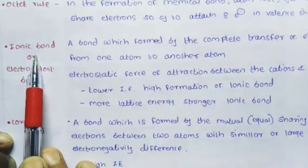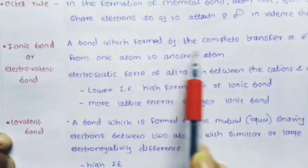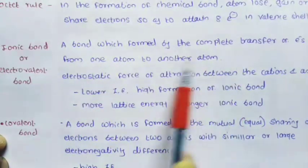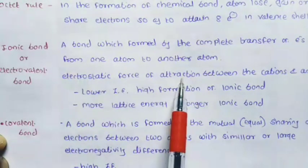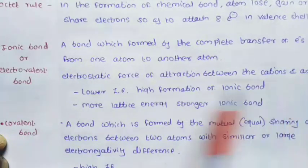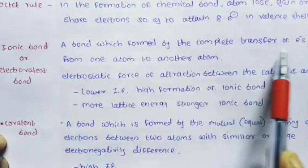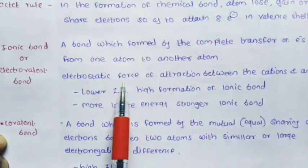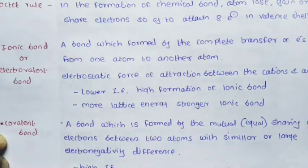The third term is ionic bond, also called electrovalent bond. A bond which forms by complete transfer of an electron from one atom to another atom is called an ionic bond. The electrostatic force of attraction between the cation and anion is called an electrovalent bond.